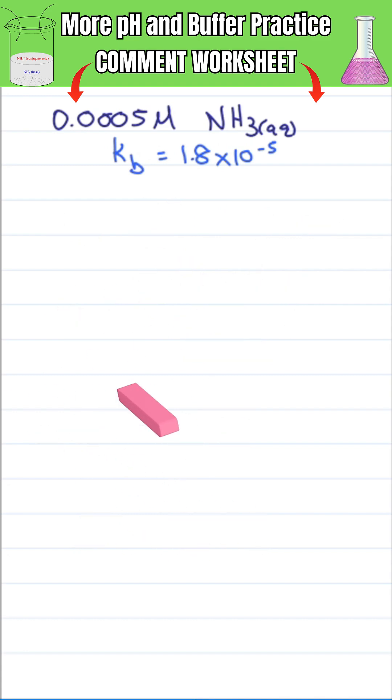Too much without a calculator? Once you get this, simply memorize Ka or Kb is equal to X squared over initial molarity, or X is equal to the square root of Ka or Kb times the initial molarity.